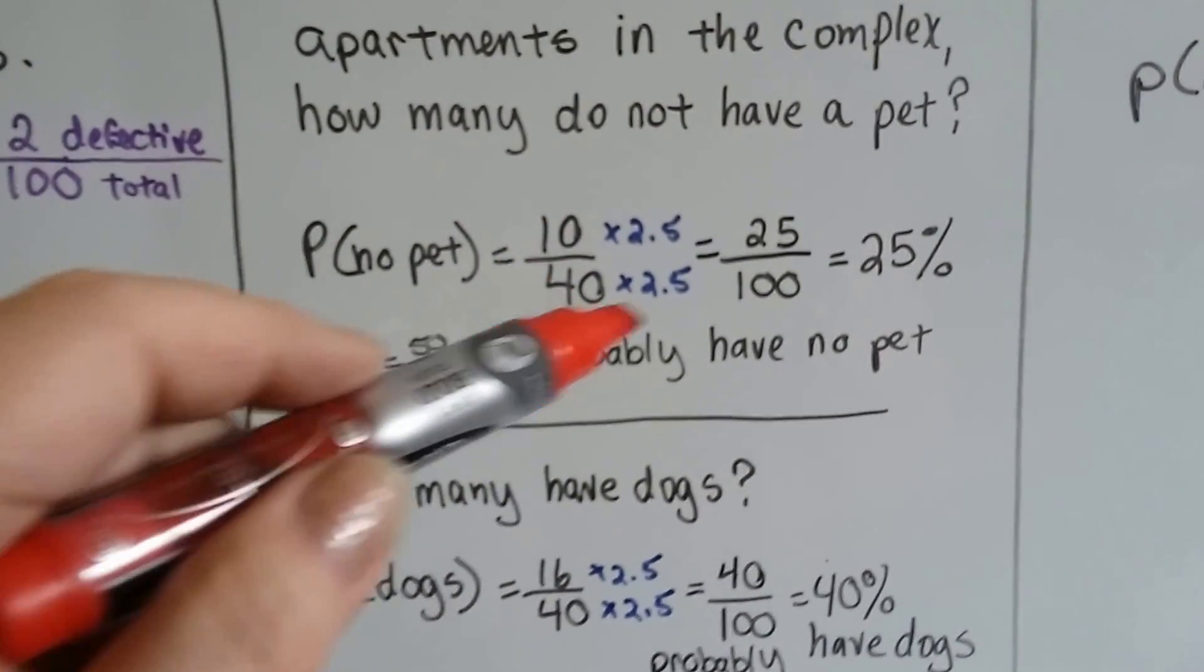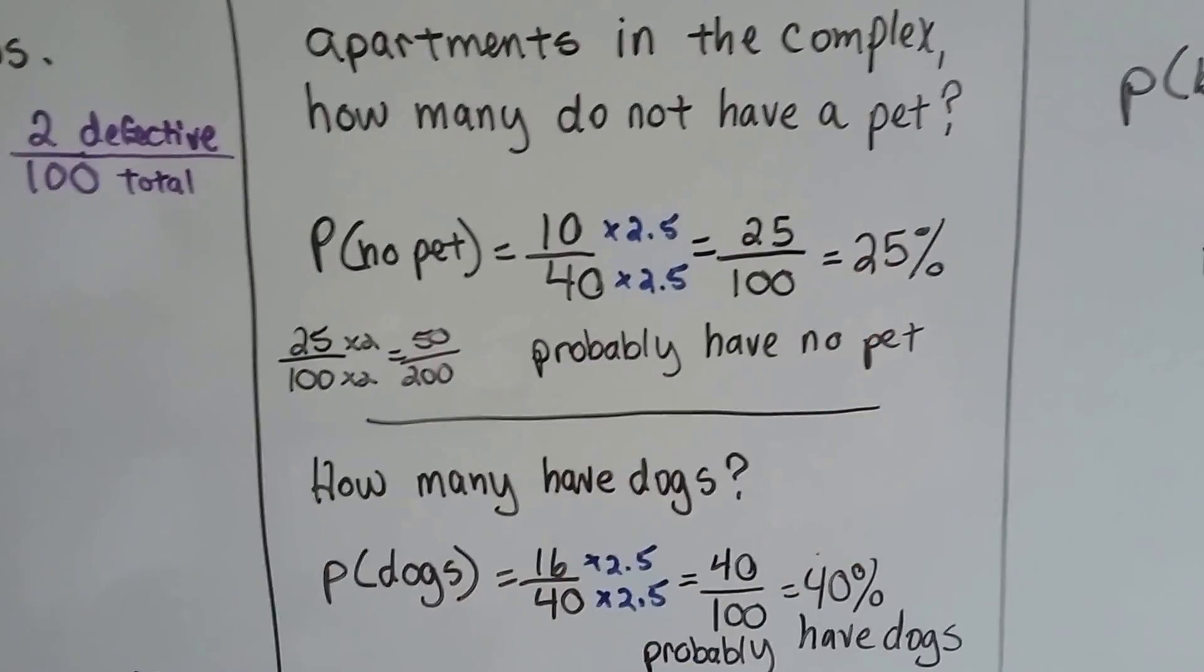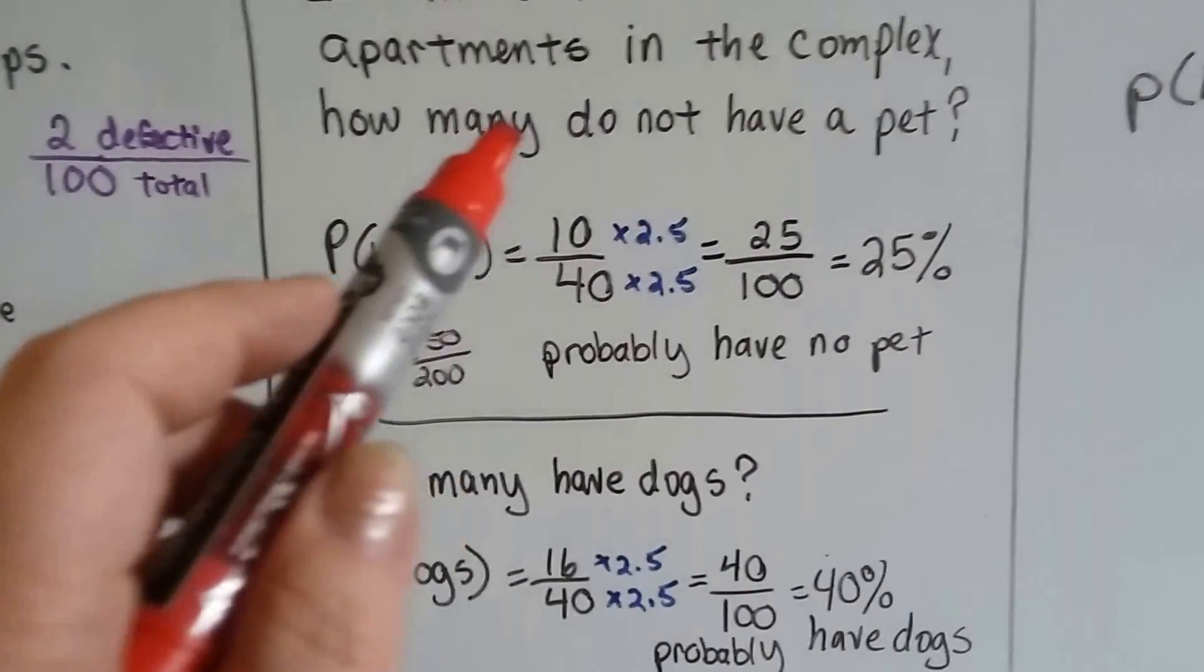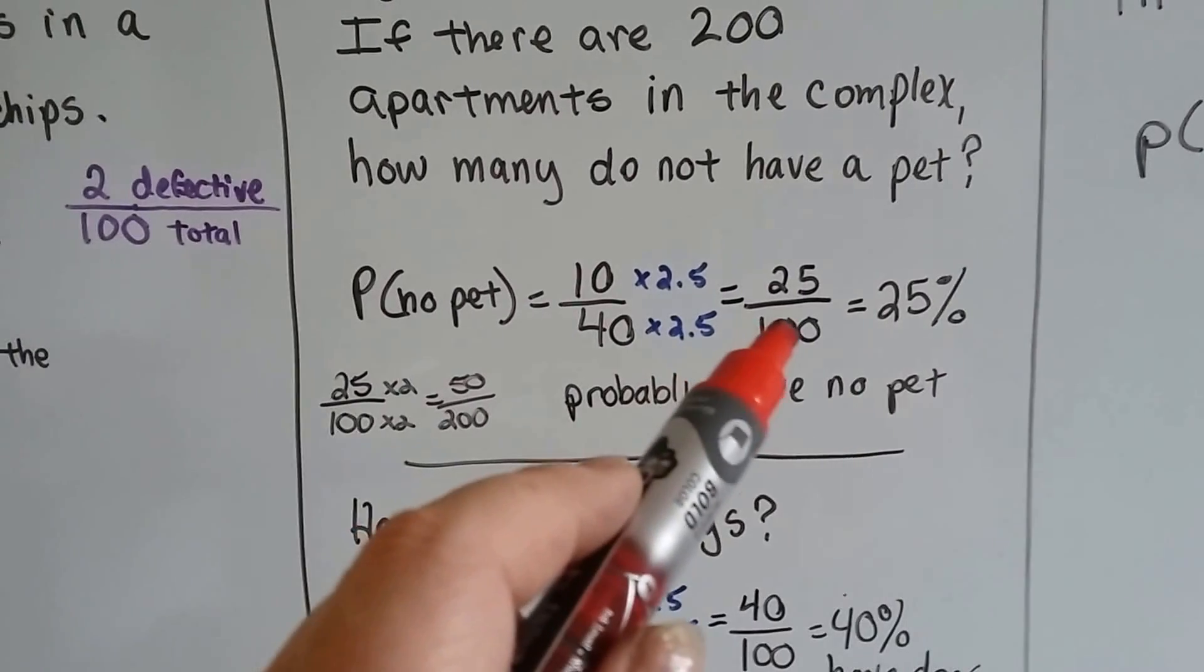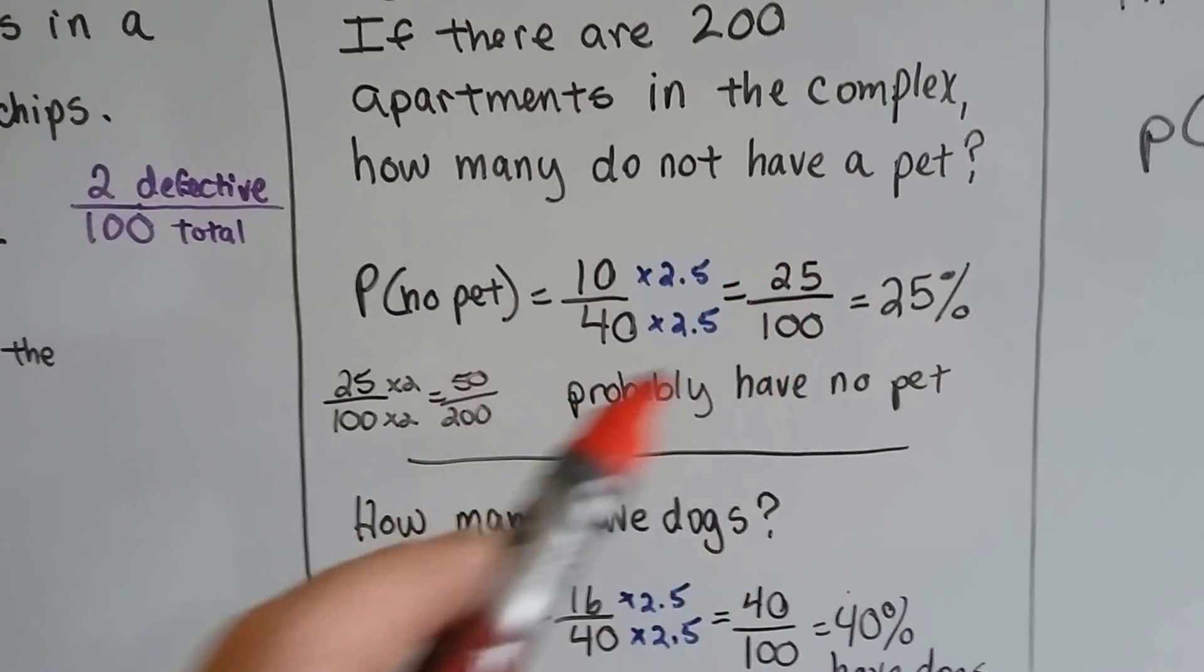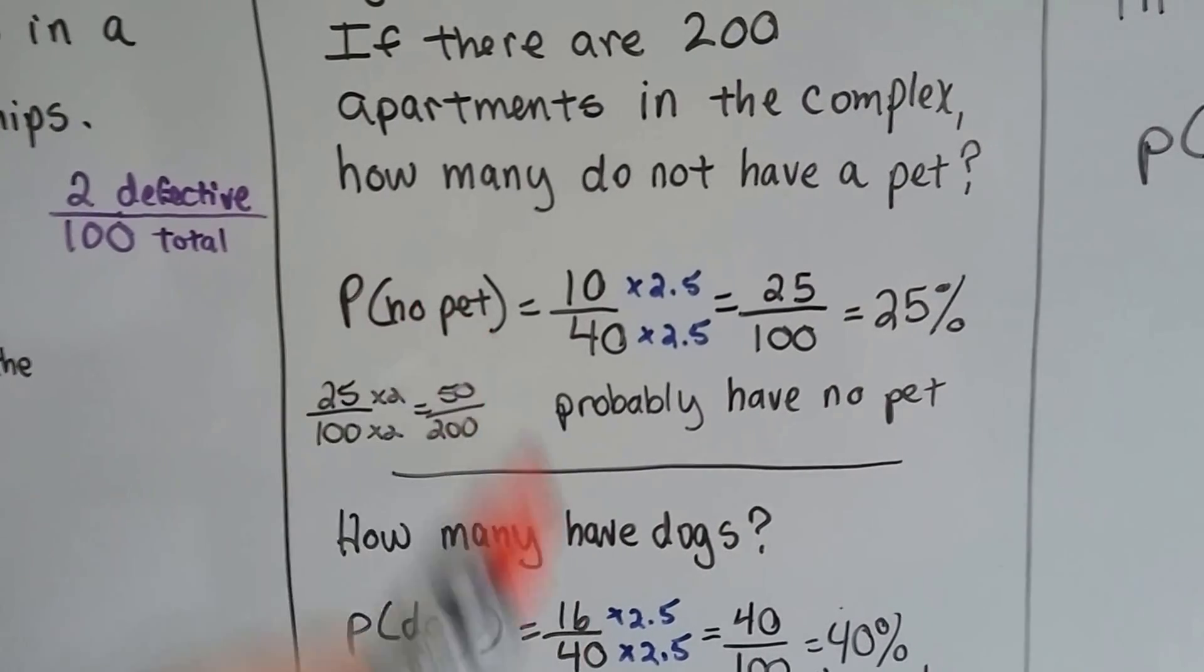10 out of 40 is 1 fourth, or 25 over 100. So 25% of the apartments don't have a pet. Well, how many do not have a pet? If there's 200 apartments, we would multiply the 100 times 2 and the 25 times 2, and we'd know that 50 out of the 200 apartments do not have a pet.